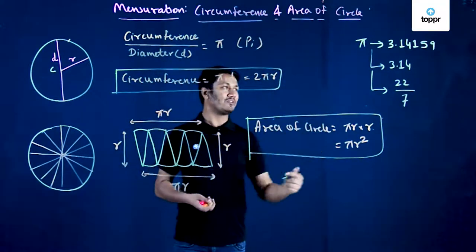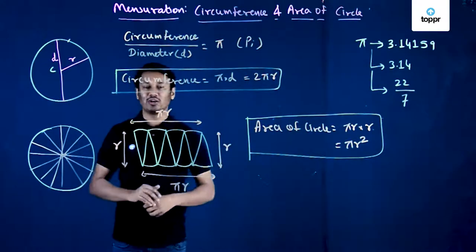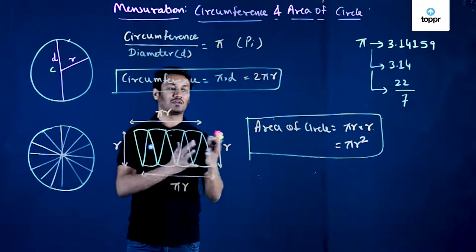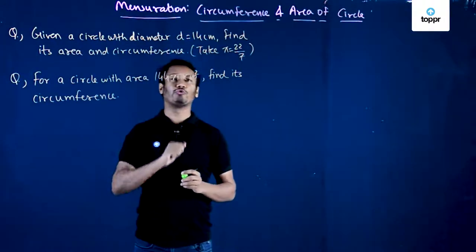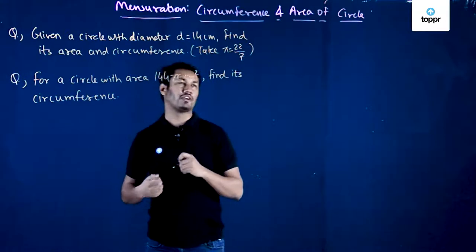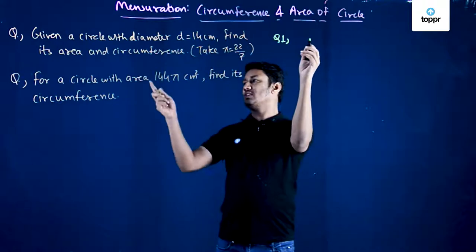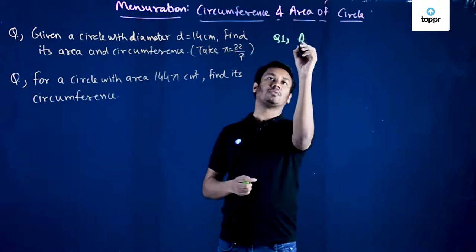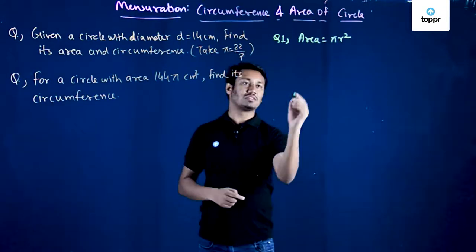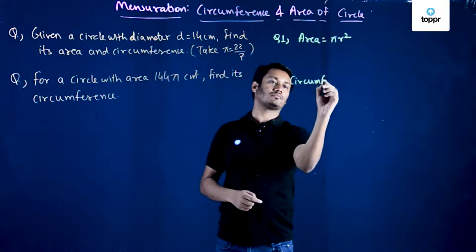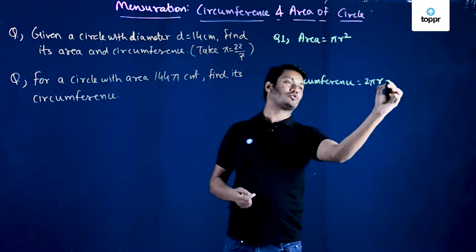These are the approximate values we can use in calculations. I hope these two formulas — circumference and area — are clear. Let us now solve a couple of questions. The first question says: given a circle with diameter d equal to 14 cm, find its area and circumference. Area is πr² and circumference is 2πr, or equivalently πd.